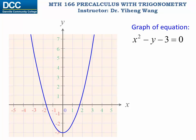If you recall, this is the graph of equation x squared minus y minus three equals zero. On this graph there are three special points, which are the points where the graph intercepts with the x or y axis.